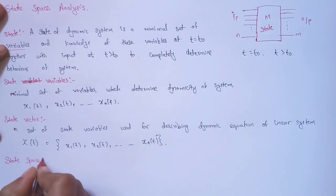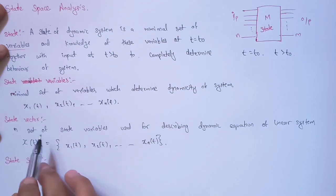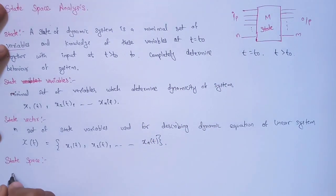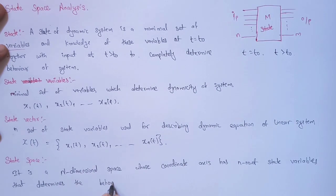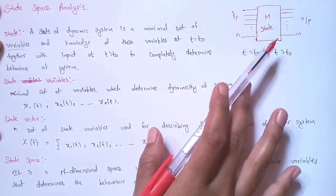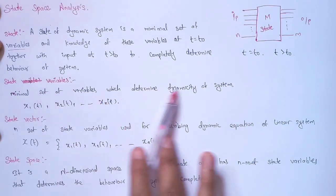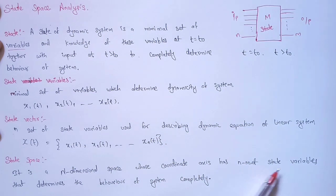Now the term state space: this is an n-dimensional space whose coordinate axes have n number of state variables, which completely determines the behavior of the system. So to recap: state is the minimal set of variables that describe the behavior of the system; state variables determine the system dynamically; state vectors are the collection of n state variables; and state space is an n-dimensional space whose coordinate axes are the n state variables, through which we can completely determine the behavior of the system.